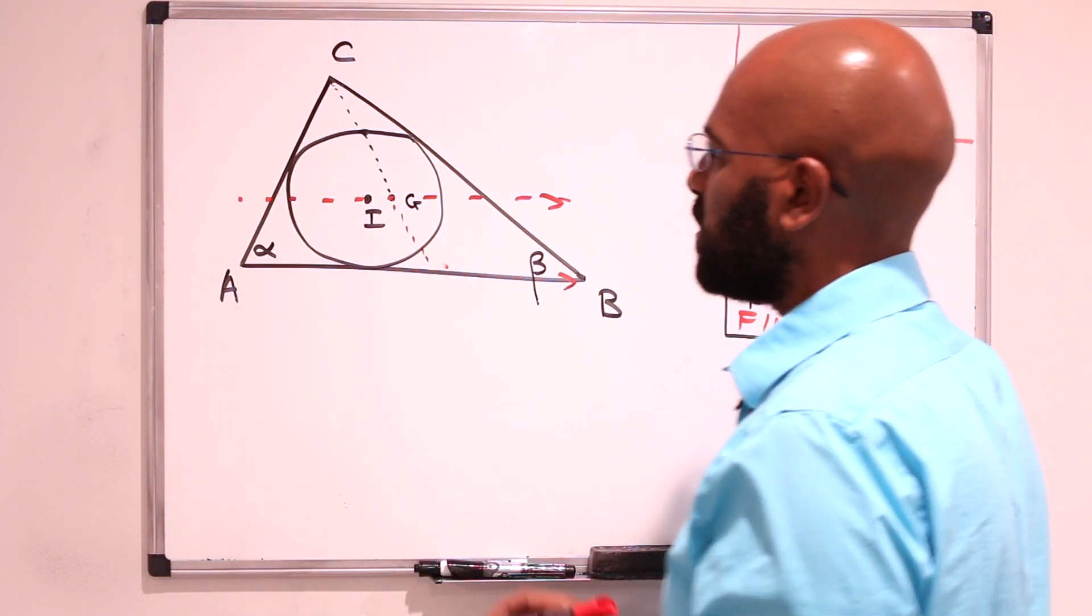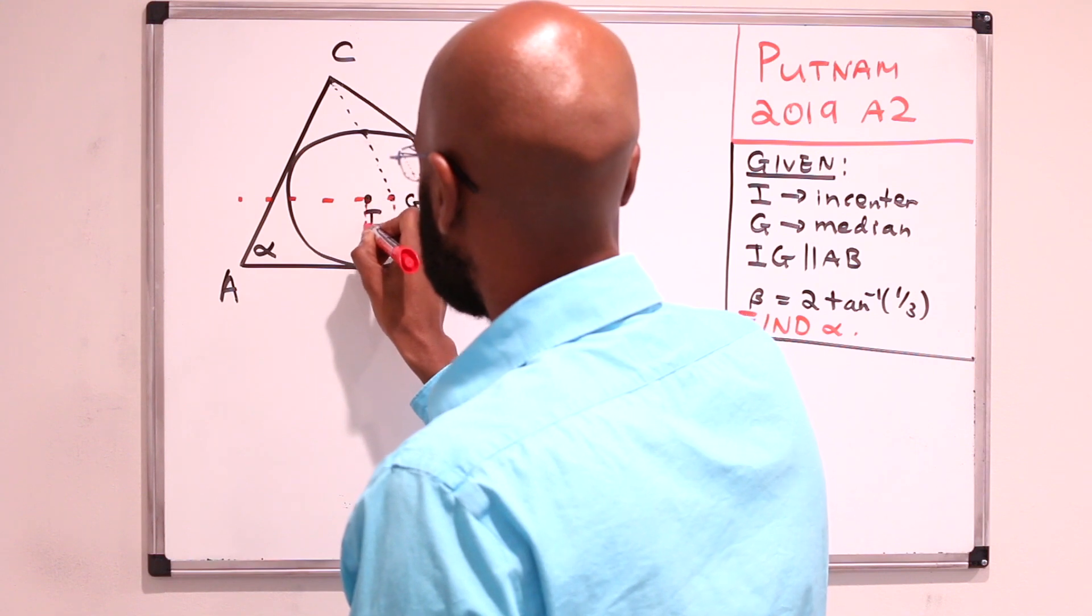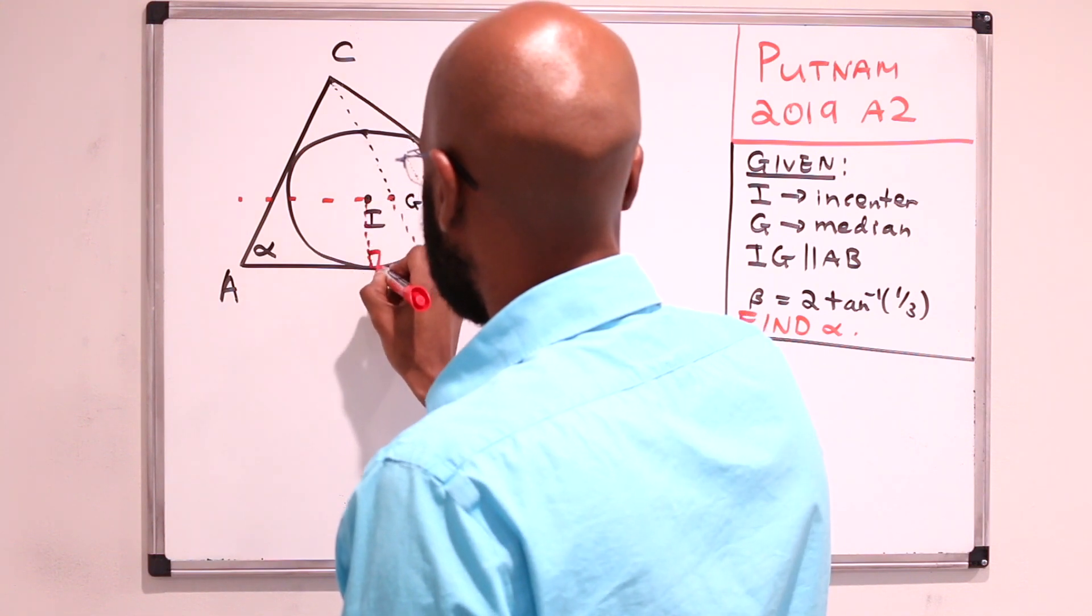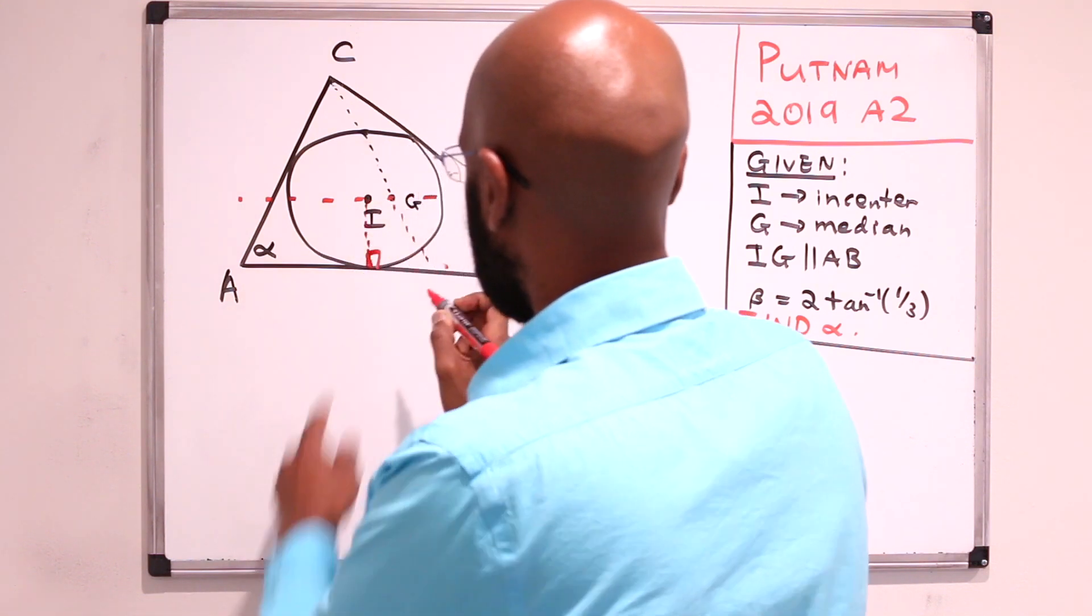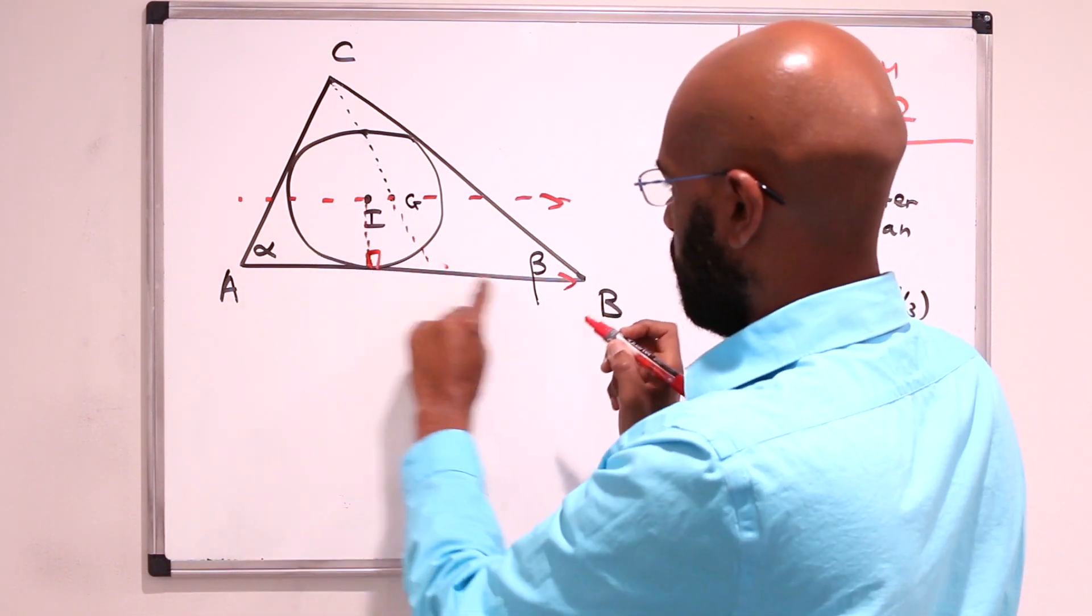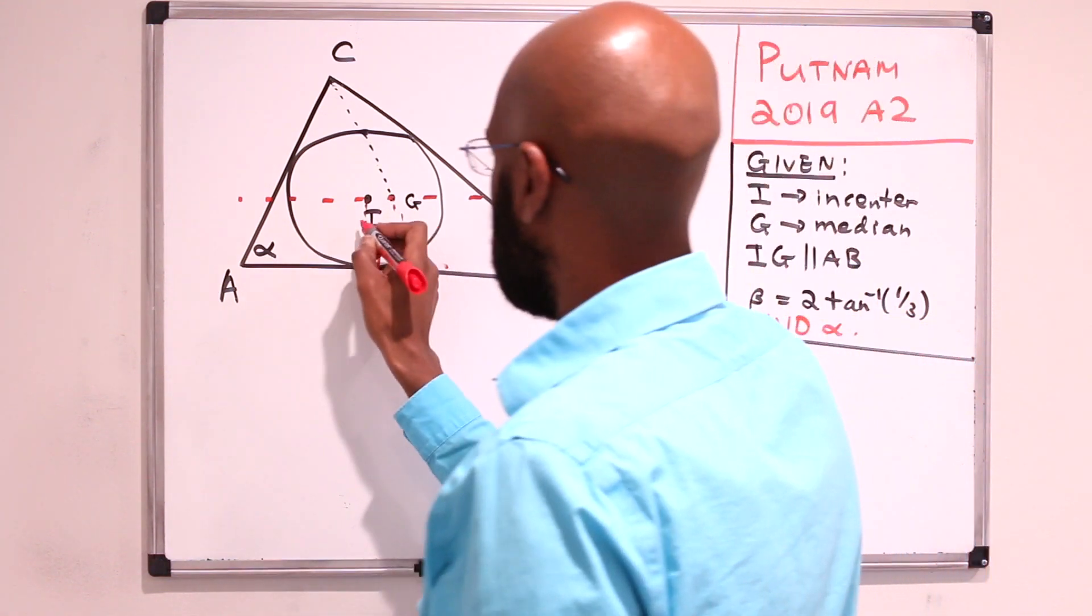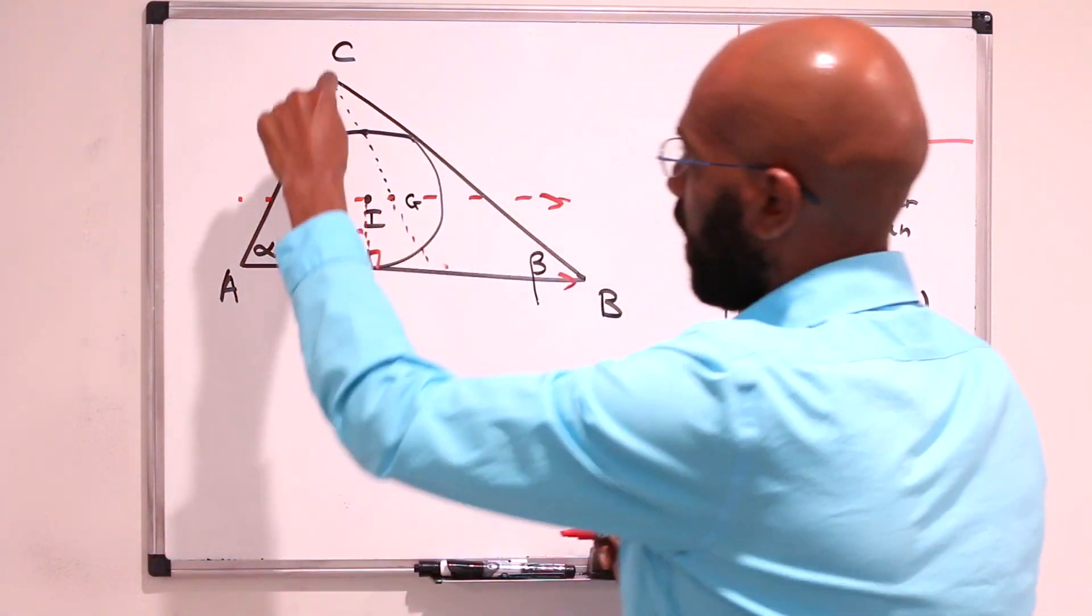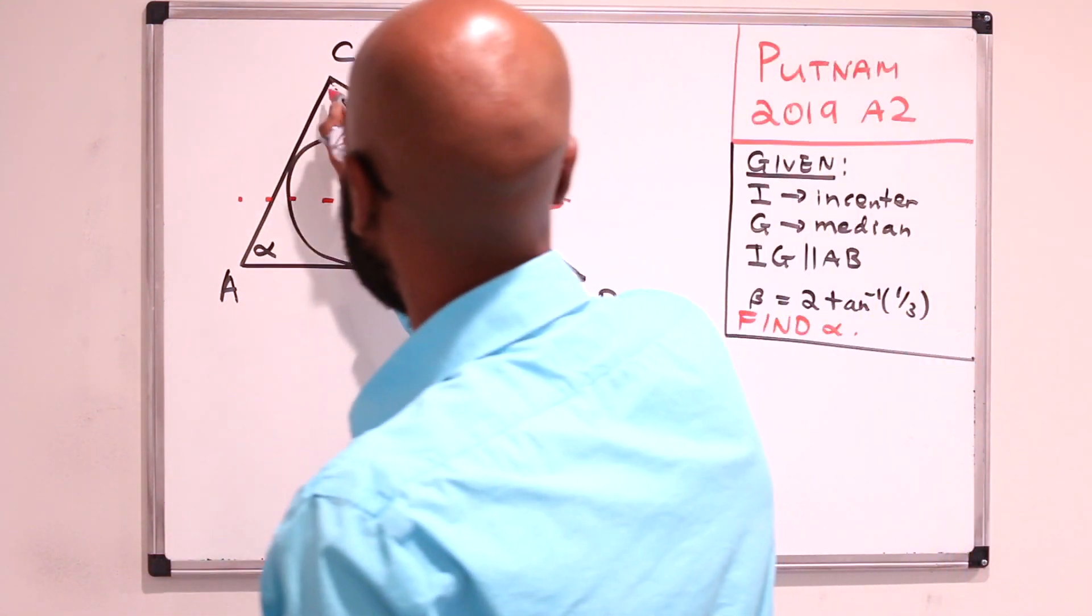So in particular, if we let R be the radius of this inscribed circle, which has an angle that's a right angle with the base AB when we drop it, then the height of this entire triangle is three times that.